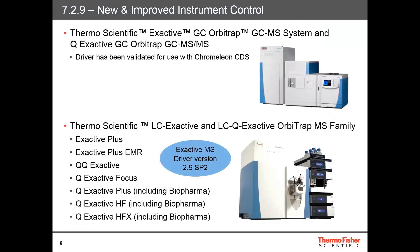Chromeleon 7.2.9 adds support for the Thermo Scientific Q Exactive GC-Orbitrap GC-MS system and also the Q Exactive GC-Orbitrap GC-MS/MS. On the LC side, this release includes support for version 2.9 SP2 of the Thermo Scientific Exactive and Q Exactive family of LC and GC mass spectrometers. This includes the Exactive Plus, Exactive EMR, Q Exactive, Q Exactive Focus, Q Exactive Plus including Biopharma, Q Exactive HF including Biopharma, and the Q Exactive HF-X including Biopharma.